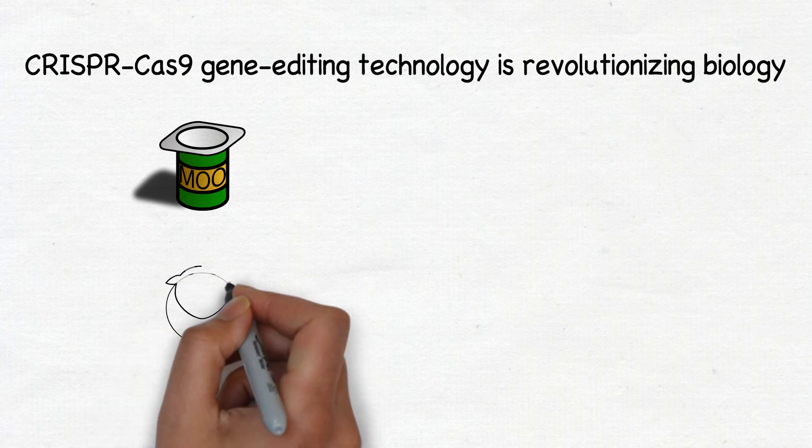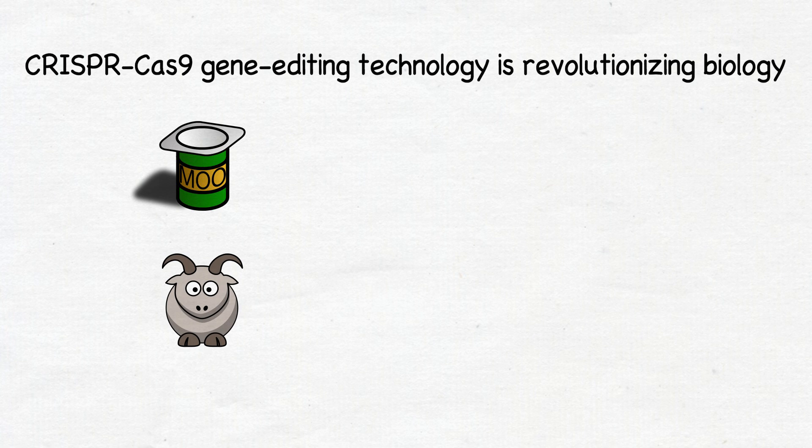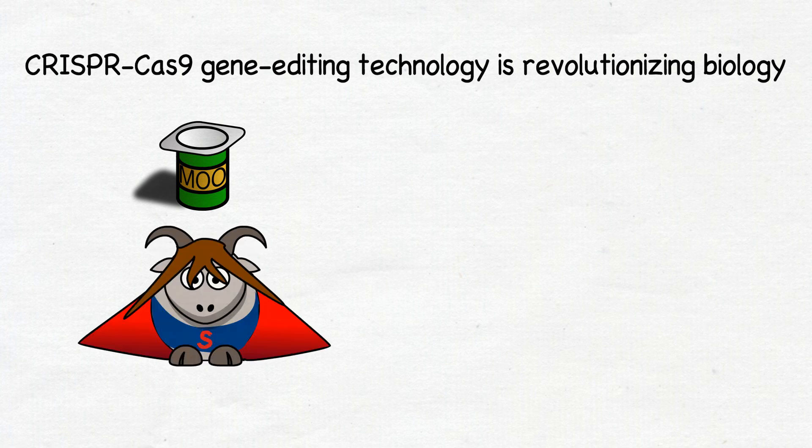it has already been used to engineer crops and livestock, like super goats that produce more meat and have longer hair for making wool.